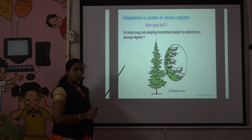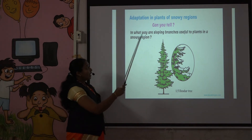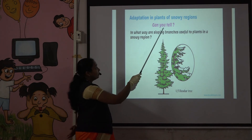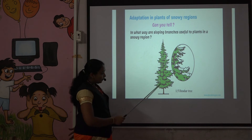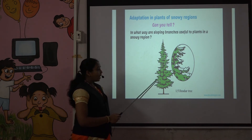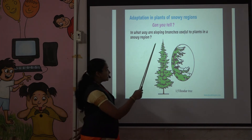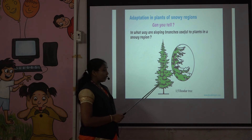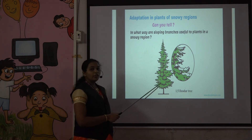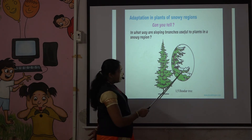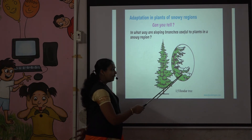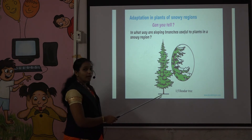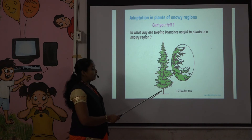Now let's talk about adaptation in plants of snowy regions. Observe the picture of the Devdhar and pine trees, which are present in snowy regions. Their shape is conical, so they are called conifers. Sloping branches are present, which prevents accumulation of snow on the plant. The plant also has a thick bark, which helps it to stand in heavy snowfall and adverse conditions.